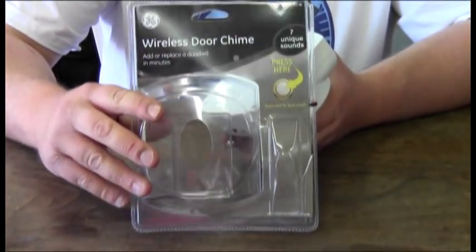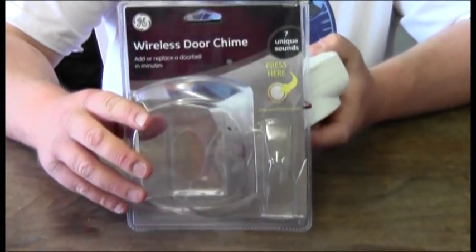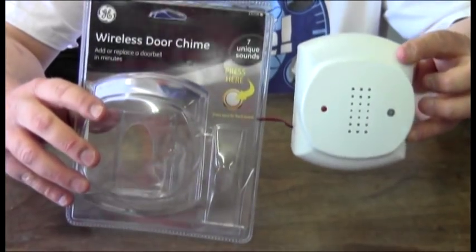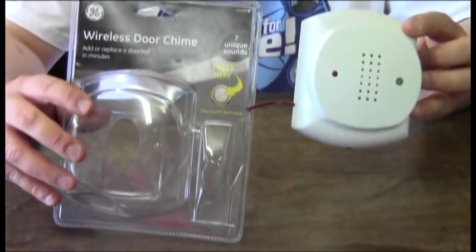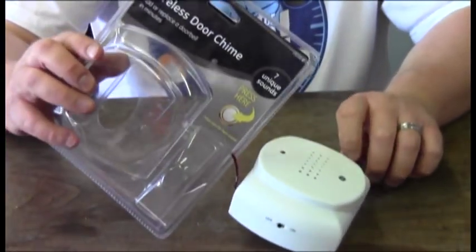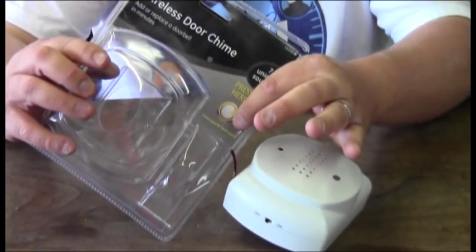I've already opened up the clamshell packaging so you guys don't have to watch me struggle. Inside you'll find that the doorbell is actually tethered to it by a red and black wire. This wire allows you to demo the six sounds that come with the doorbell.